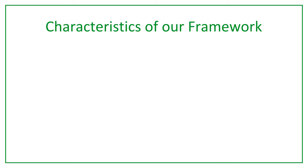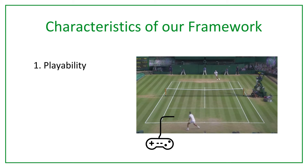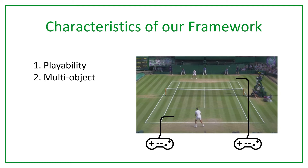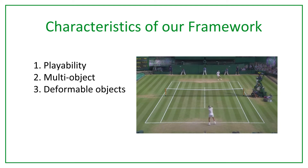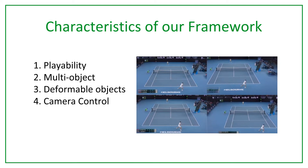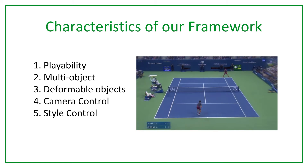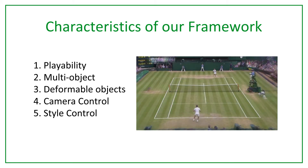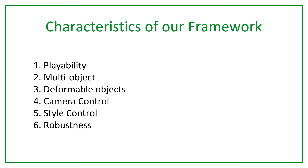In this work, we propose a method to construct such a playable environment that presents 6 core characteristics. The user can control the players using a keyboard or gamepad, as in a video game. Multiple objects can be independently controlled. The model can handle deforming objects, such as humans. The camera can be controlled explicitly. The style of each object can be manipulated explicitly. The model is robust to camera calibration and localization errors.